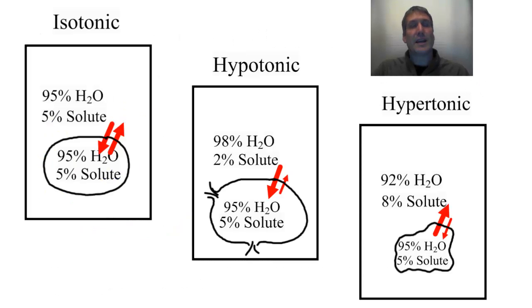So the three different types of environments are an isotonic solution, a hypotonic solution, and a hypertonic solution. Let's go through all three and see what's happening.